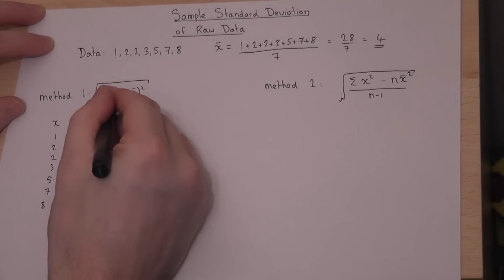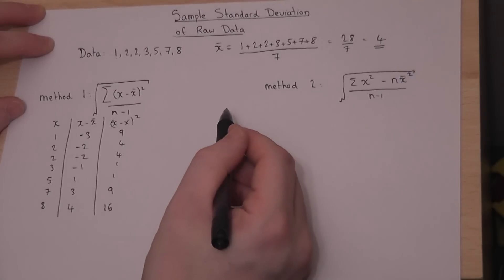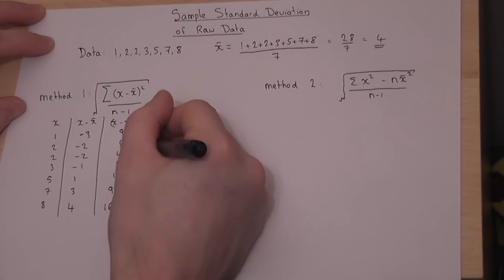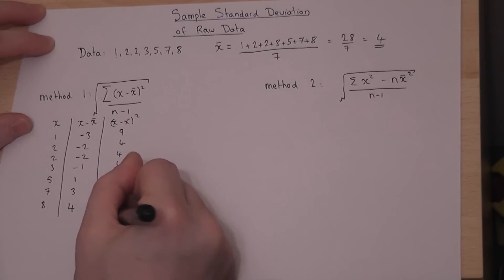Now, this just means find the sum of those values. So the sum of all those values, I'll write down here, is equal to 44.